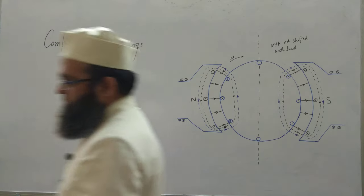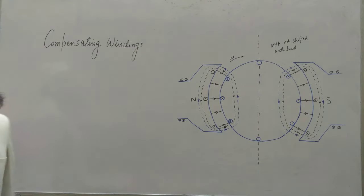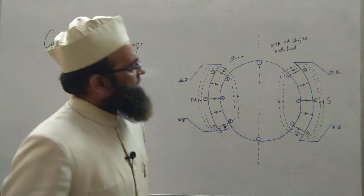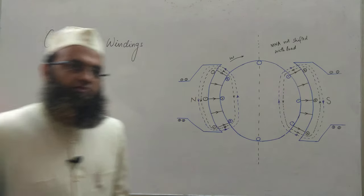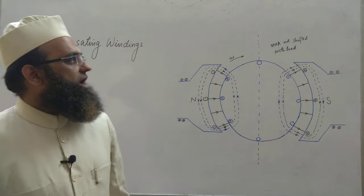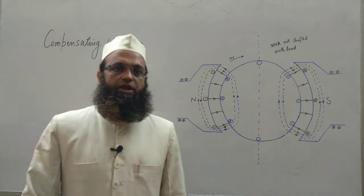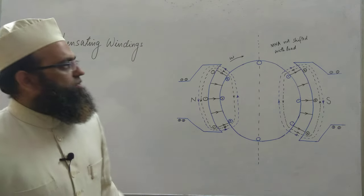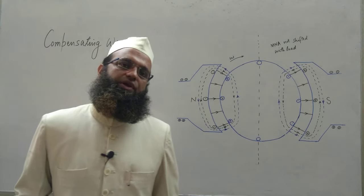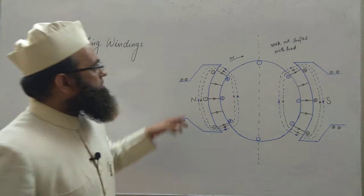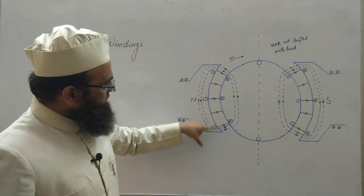Now let us discuss the third approach to solve the problem of commutation: compensating windings. To cancel the effect of MNA shift as well as flux weakening due to armature reaction — armature reaction has two types of problems, one is MNA shift and the other is flux weakening — to cancel out these effects completely, compensating windings are placed in slots cut on the pole faces.